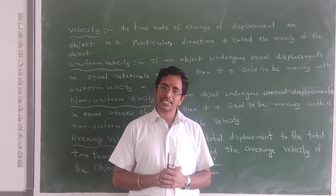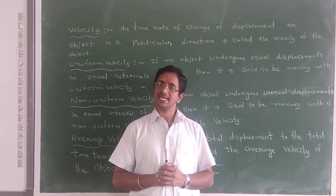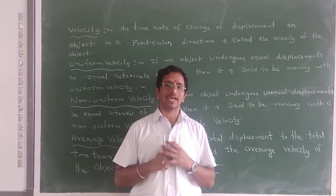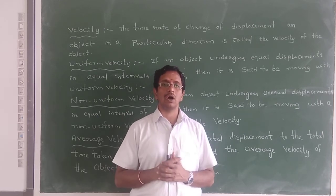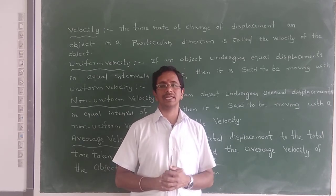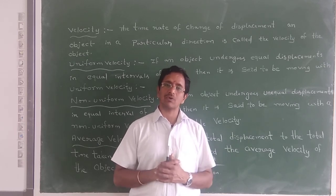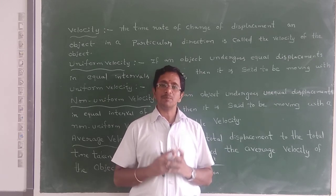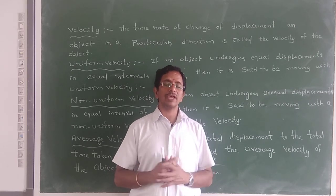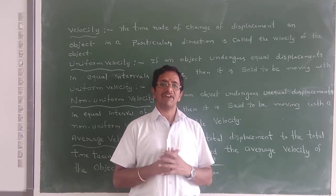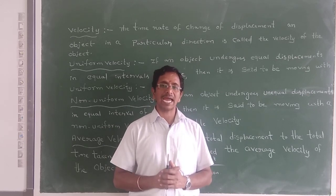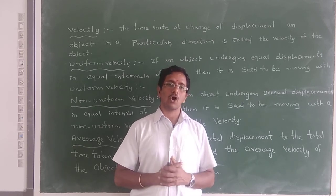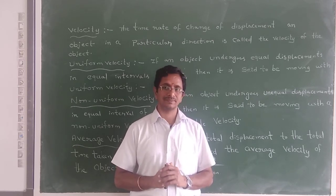Next, Acceleration. The rate of change of velocity is called acceleration. The time rate of change of velocity of an object is called the acceleration of the object. It is a vector quantity. Uniform Acceleration: An object is said to be moving with uniform acceleration if its velocity changes by equal amounts in equal intervals of time.